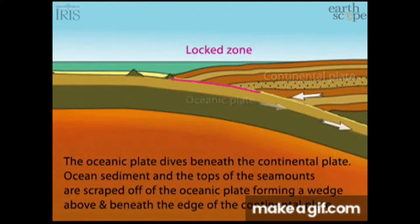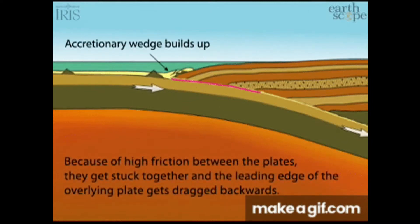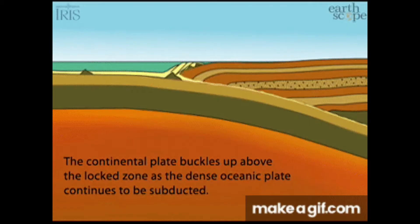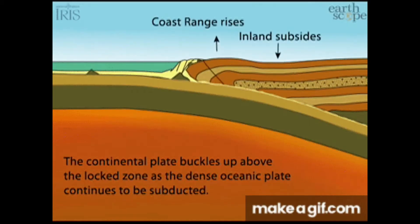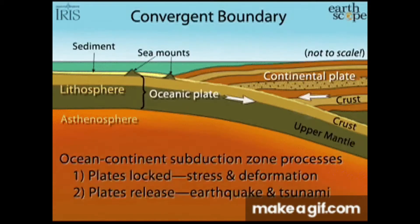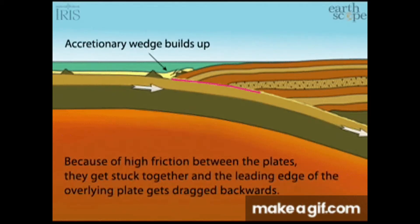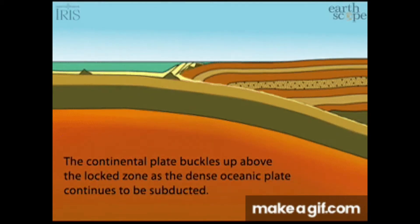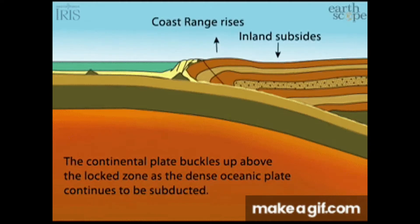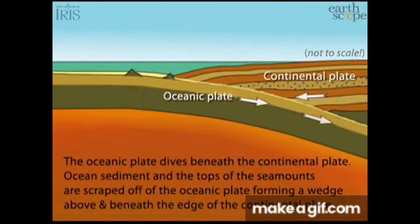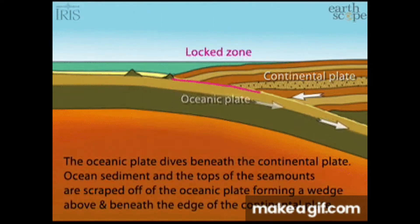At convergent plate boundaries, oceanic crust is often forced down into the mantle where it begins to melt. Magma rises into and through the other plate, solidifying into granite — the rock that makes up the continents. Thus, at convergent boundaries, continental crust is created and oceanic crust is destroyed.